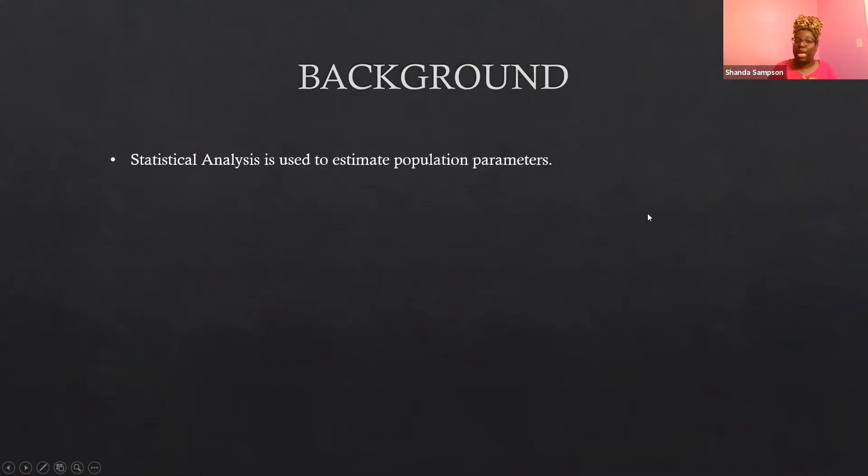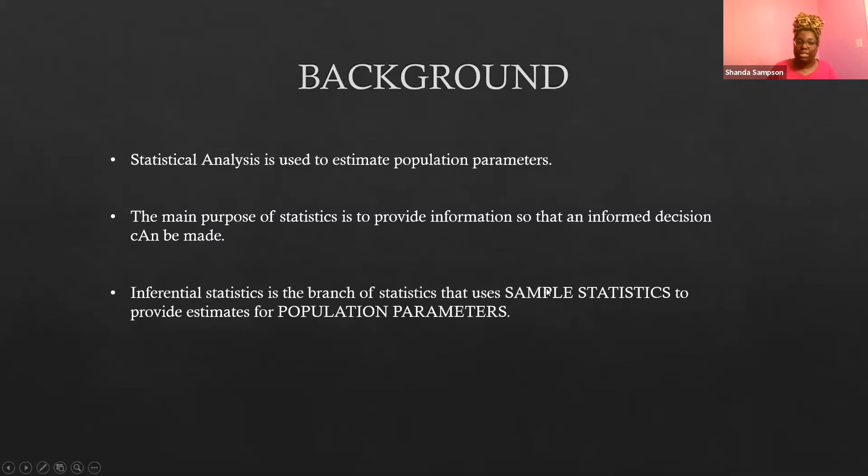Statistical analysis is used to estimate population parameters. That's what we use it for. We want to estimate something that's going on, a parameter in our population, and we use a sample to do that. So the main purpose of statistics is to provide information so that an informed decision can be made.